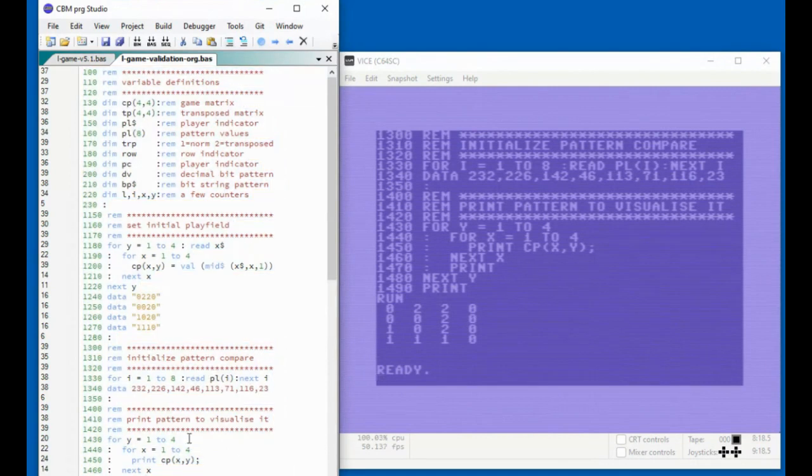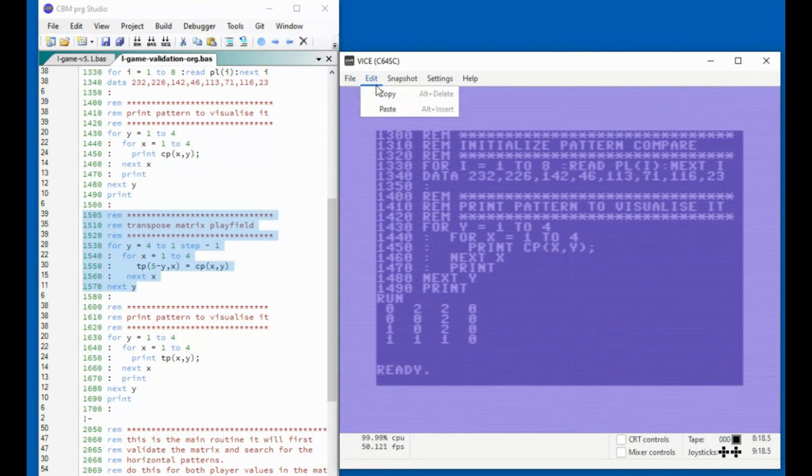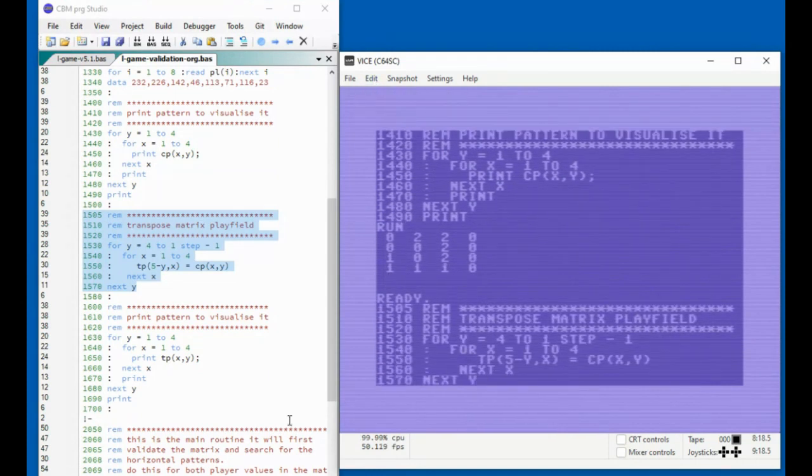As described in the explanation part of this video, we also need to transpose the matrix so that we can also validate the vertical L-shape patterns that the players could have drawn using the player pieces. In the same way we did with the first matrix, we also include the routine to print this matrix on the screen so we can see the difference.